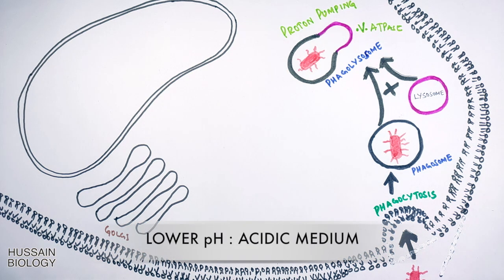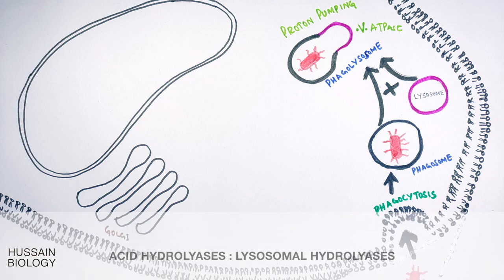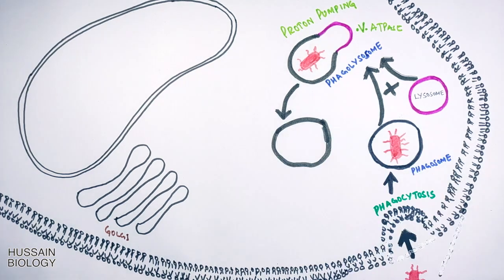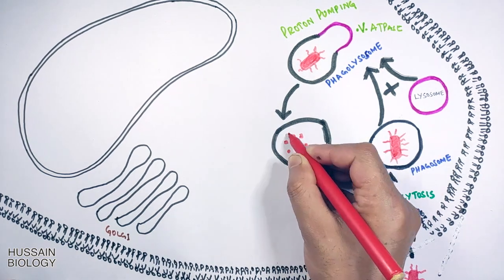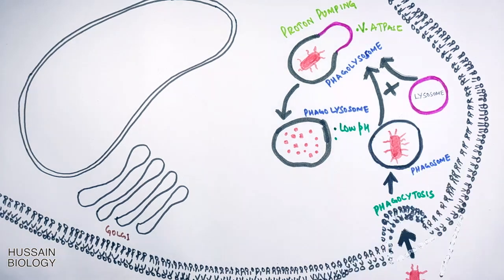And this acidic environment brings about the activation of acid hydrolases or phagolysosome. Remember the acid hydrolases, also known as lysosomal hydrolases, work best in acidic medium. That's why we need to create acidic medium first. Now with the activity of acid hydrolases the bacteria is broken down into small peptides as shown in the diagram. So this is how the exogenous pathogen is processed within the cell.